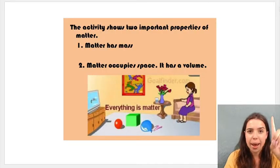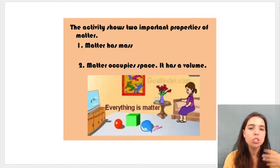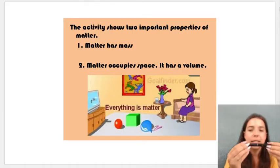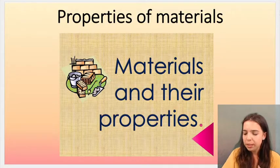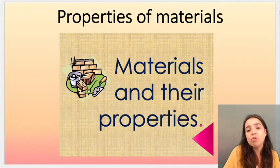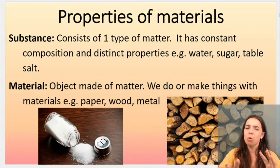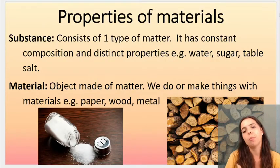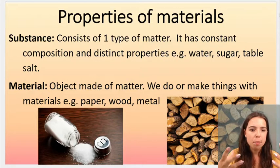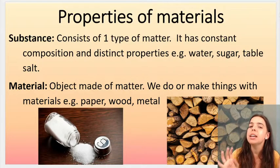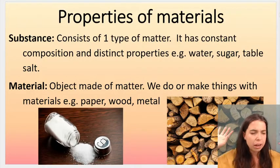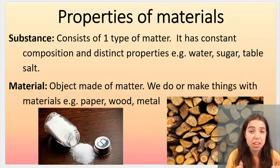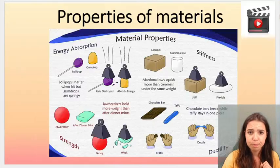Matter has mass and matter has volume — in other words, it occupies space. So this pen is matter: it's made up of particles, it has a mass, it has a volume, it's occupying space. When we classify matter we speak about properties of materials. Substances consist of one type of matter — water is a substance. Materials are objects made out of matter with practical use in our lives, like wood.